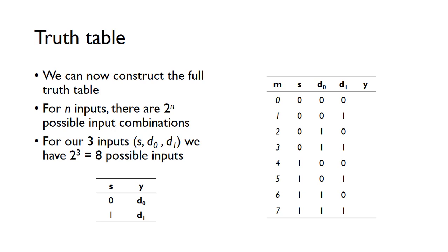We can now construct the truth table. We've got three inputs: our two data inputs d0 and d1, and our select input s. So we've got eight possible input combinations, our output y, and the minterm number from 0 to 7.